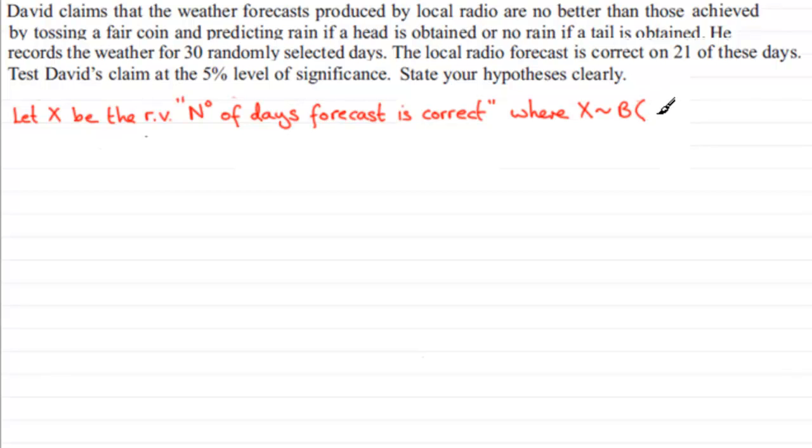And so what I've got here is a binomial model, a binomial model where N is going to be 30. And if David is correct, then we've got P, the probability of success will be 0.5. But we're testing this hypothesis. So I'm going to say that H0 is going to be that P, the probability of success, is going to be a half, what it would be for getting a head or a tail.